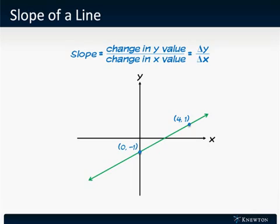Let's take a look at an example of calculating slope. Let's find the slope of a line that runs between the point (0, -1) and the point (4, 1). To do this, we have to calculate the change in y value and the change in x value between these two points.